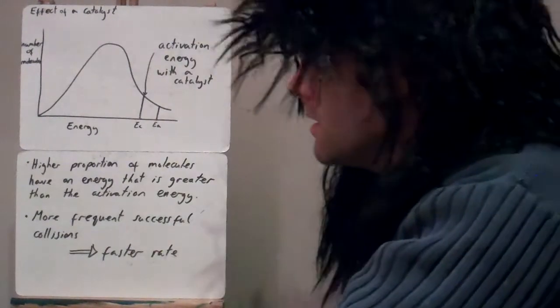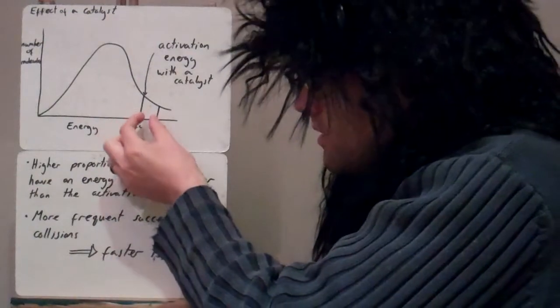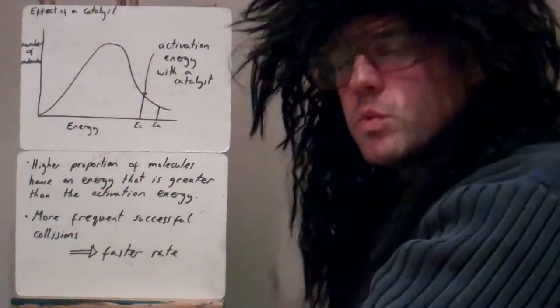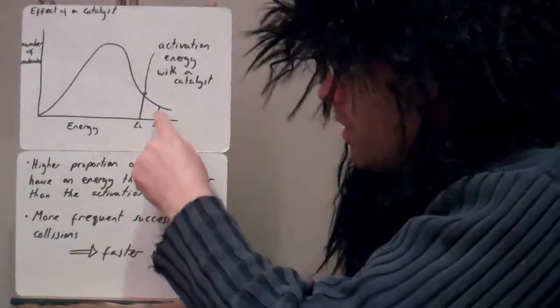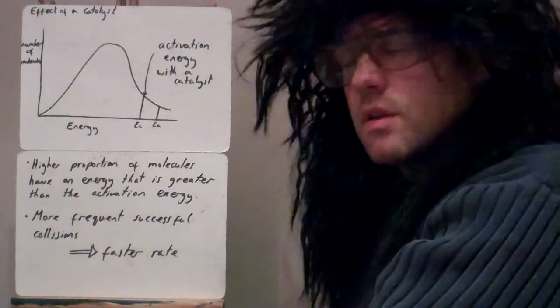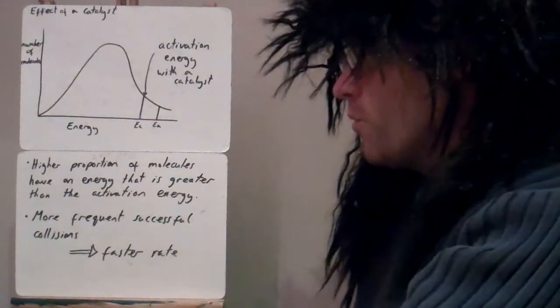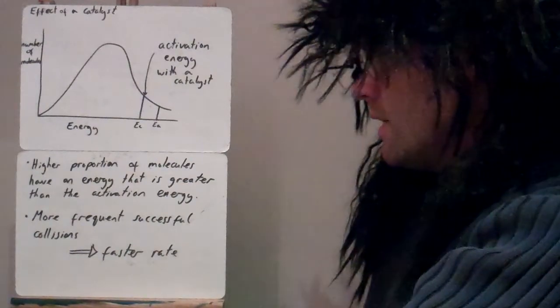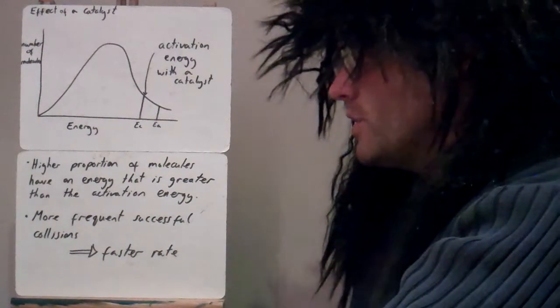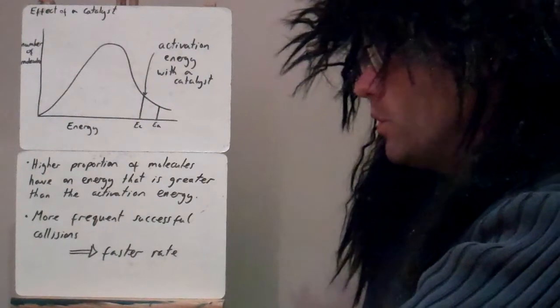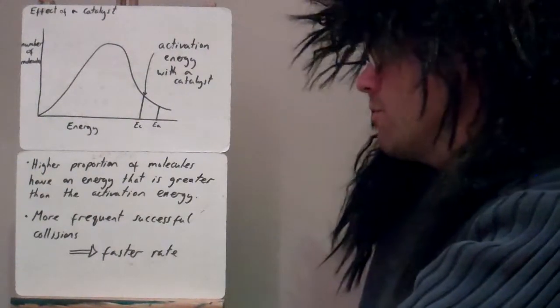So that means then that this section here are molecules which now can react, and before they couldn't, only these ones here could react. So we've got a higher proportion of molecules which have an energy that is greater than the activation energy, which again means more frequent successful collisions, so it's a faster rate of reaction.